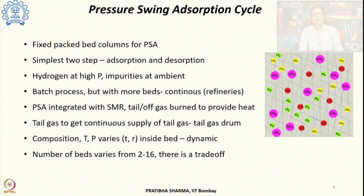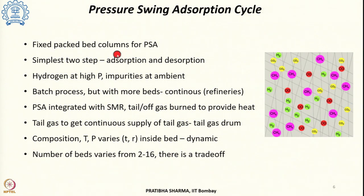Looking in more detail at the pressure swing adsorption cycle: the simplest cycle can have 2 steps — an adsorption step and a desorption step. The process is conducted in a fixed packed bed column. When the feed gas enters the fixed packed bed PSA column at higher pressure, the impurities get adsorbed, and we can get hydrogen as a product in the opposite direction to that of the feed.